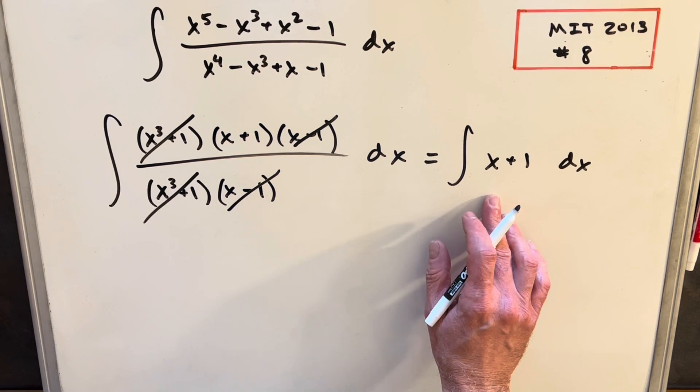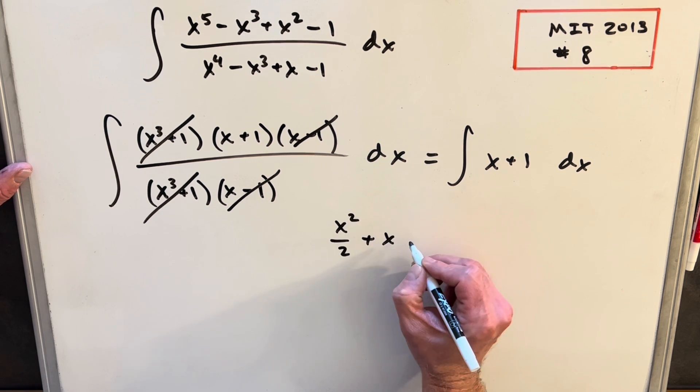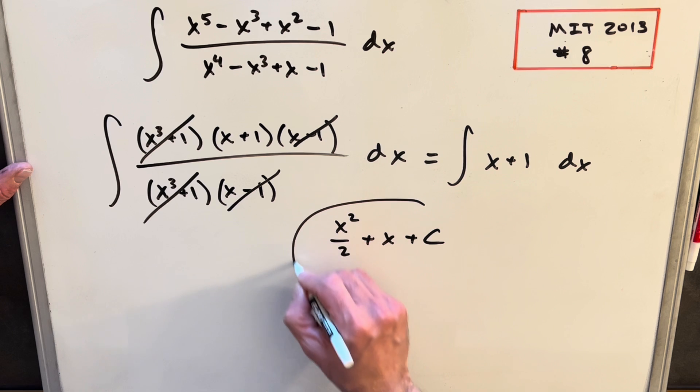Of course, that's a very simple integral, power rule. So we'll integrate this and we'll have x^2/2 + x + c, and that's it, we're done.